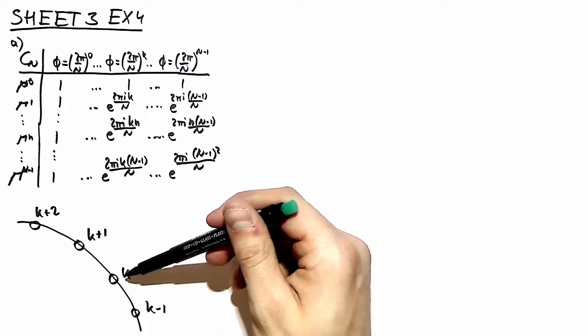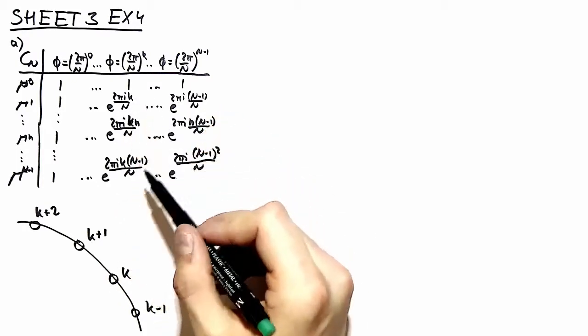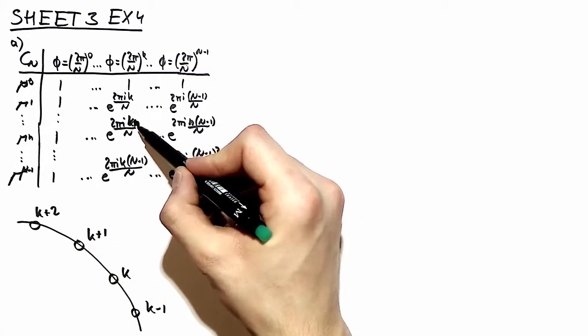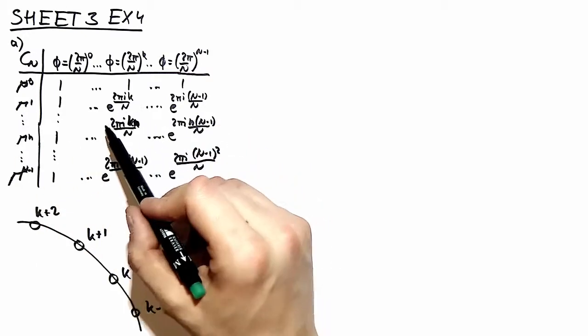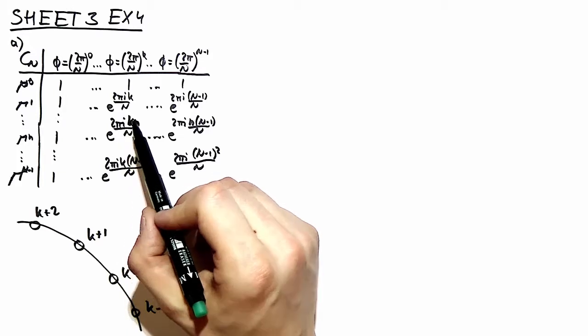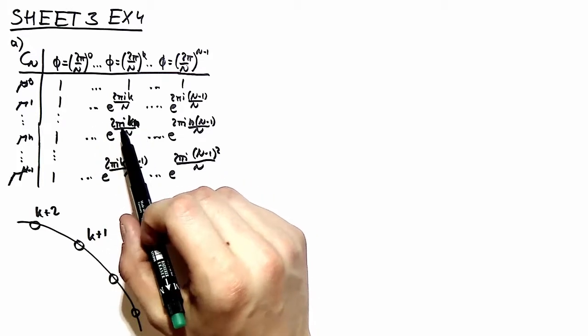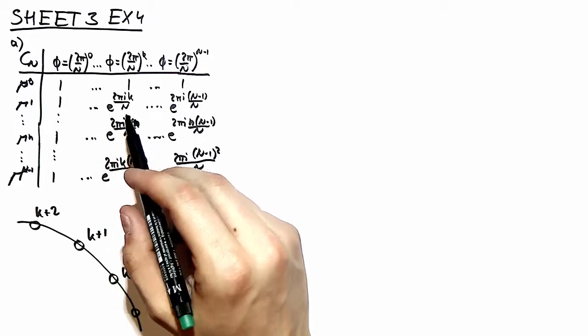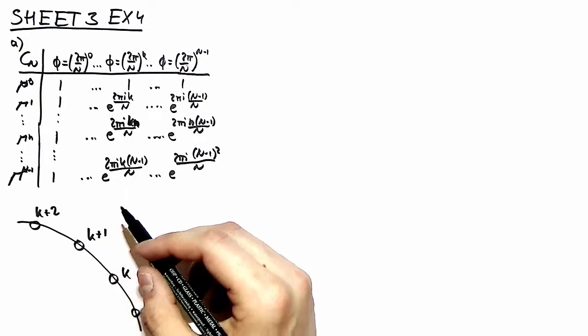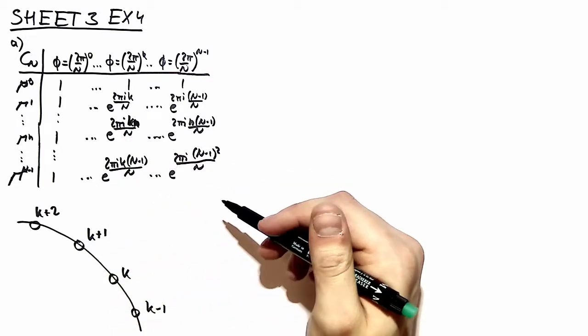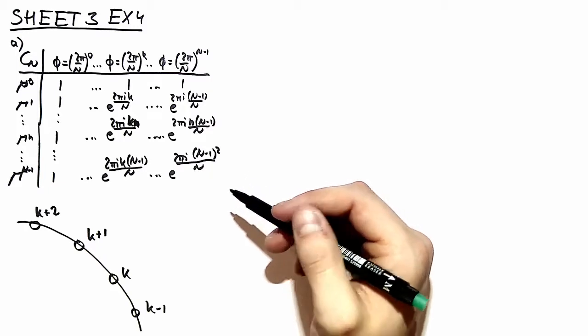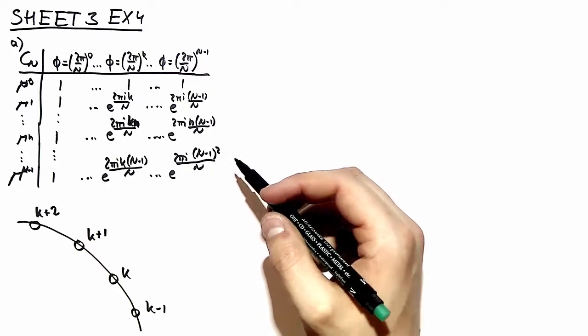The position k of the vector, here the k is in the exponent, and to the nth representation. So we have e to the 2 pi i k times n over big N. And with that we can proceed and use our projector technique from exercise number 3 to find a basis for this tau representation.